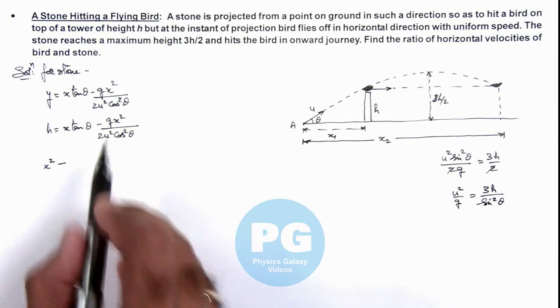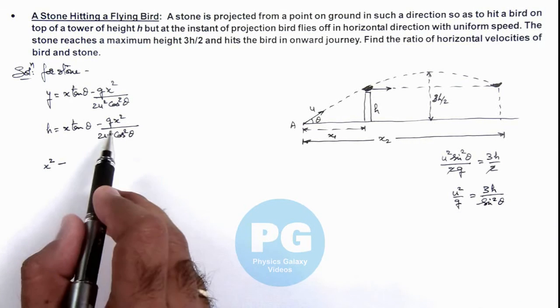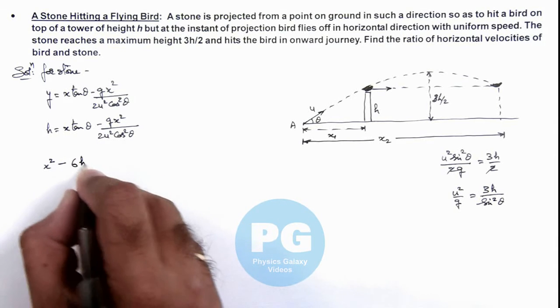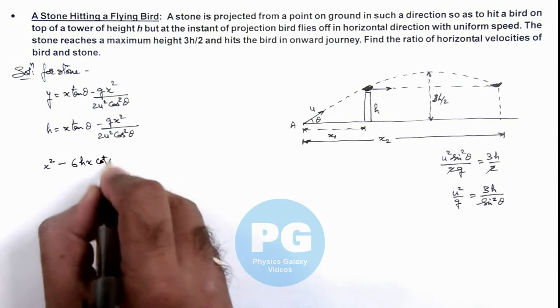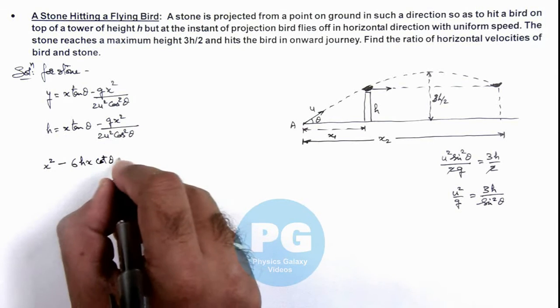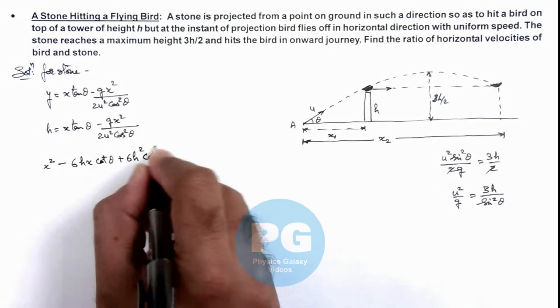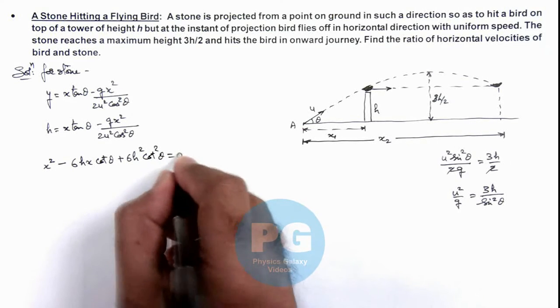This will become x² - 6h·x·cot(theta). I have already simplified this expression, so I am getting this as 6h²cot²(theta). This is after simplification.